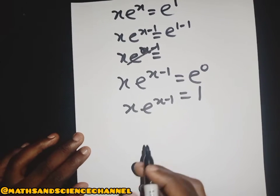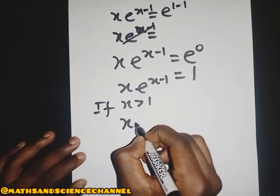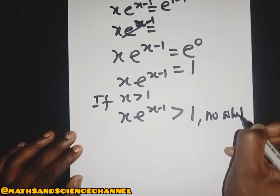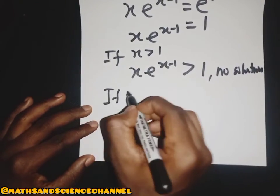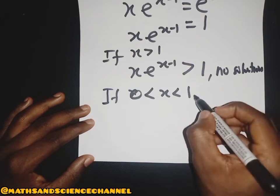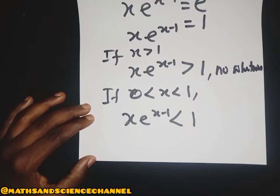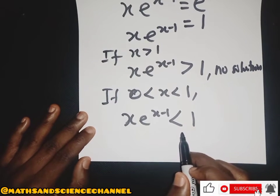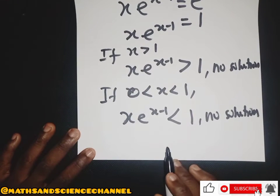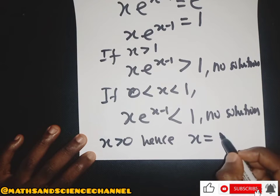Now if s is greater than 1, then x^(s−1) would also be greater than 1, and therefore there is no solution. Also, if s is in the range 0 < s < 1, then x^(s−1) would be less than 1, and there would also be no solution there. We have now explored all possible values of s greater than 0, so our only solution is s = 1.